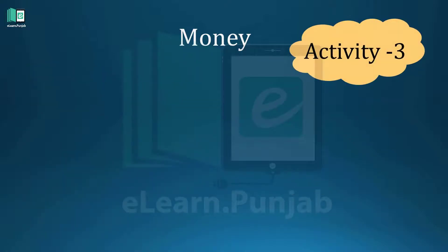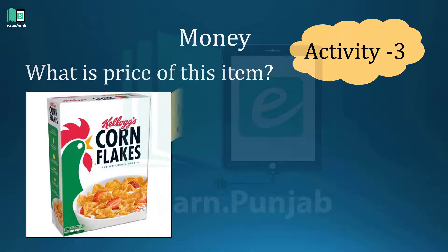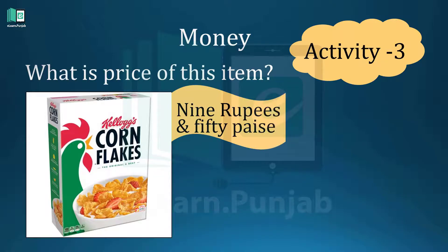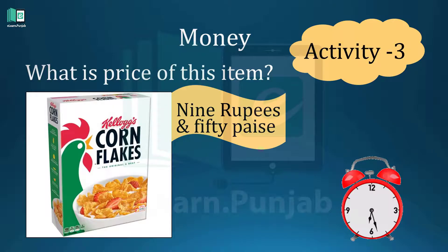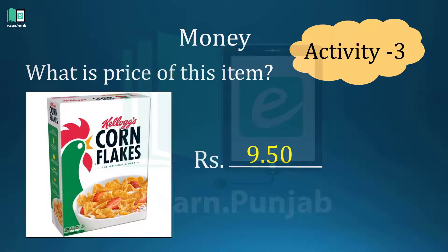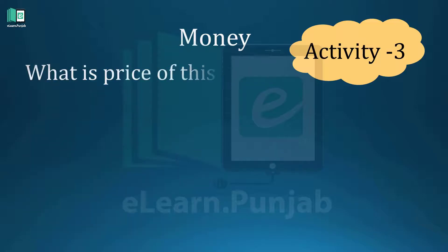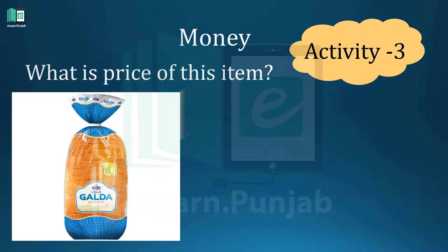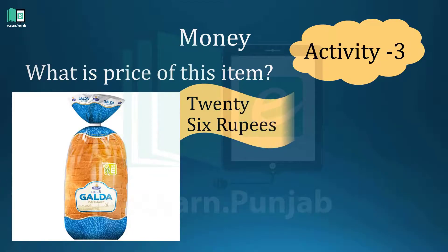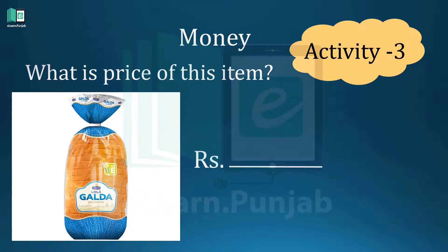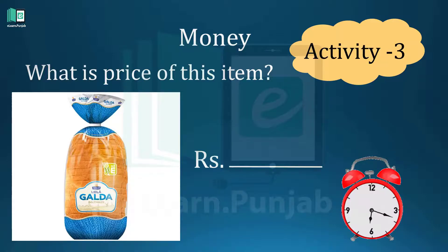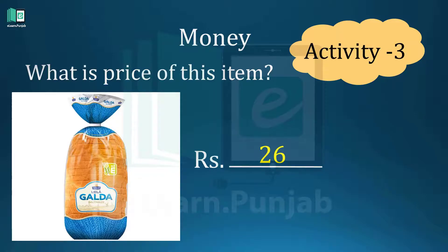Now move on to activity three and see the product price. What is the price of this product? You can see the product price in words — write down the price in digits. The price of this product is rupees nine point five zero. Now see the price of this item. The item has a value in words — write down the value in digits. The price of this item is rupees twenty-six.